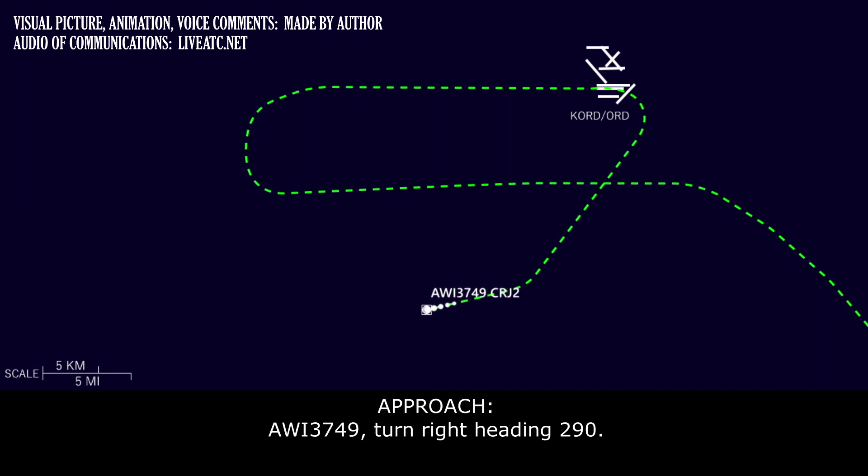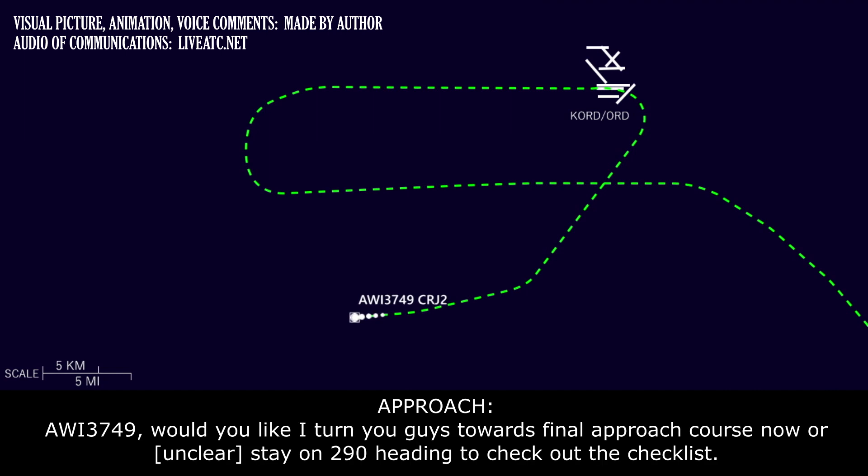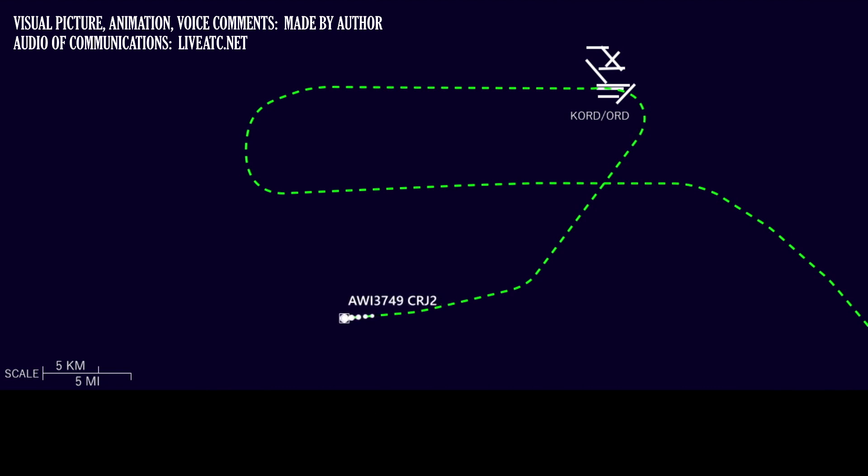Wisconsin 3749, turn right heading 290. Would you like me to turn you guys toward the final approach course now, or do you guys just want to stay on the 290 heading to check out the checklist? We can set up the approach, please.